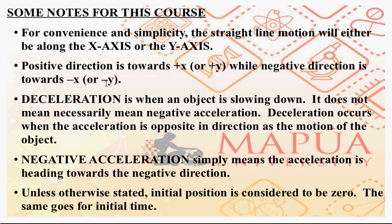Some notes for this course. For convenience, when we say straight line motion or motion along a straight line, the motion will either be along the x-axis or along the y-axis. As such, we have two possible directions: the positive direction and the negative direction. For the x-axis, positive direction is positive x, negative direction is negative x. For the y-axis, positive direction is positive y, negative direction is negative y.